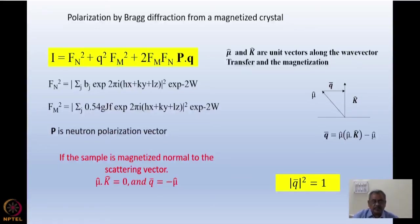And magnitude of q square is equal to 1. So this expression has got two components which I gave you earlier. It has got a nuclear component and a magnetic component weighted by q square. Often q square is equal to 1 because the direction of the magnetic moment or the magnetic field is normal to the k vector or the magnetic momentum transfer.